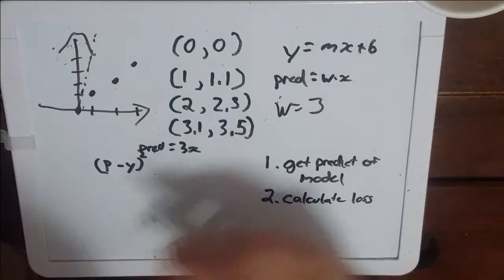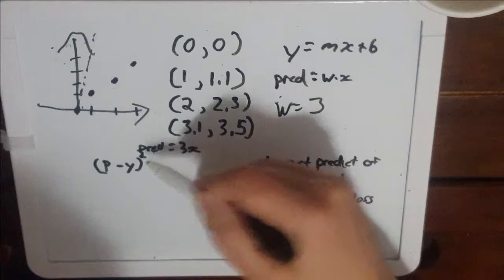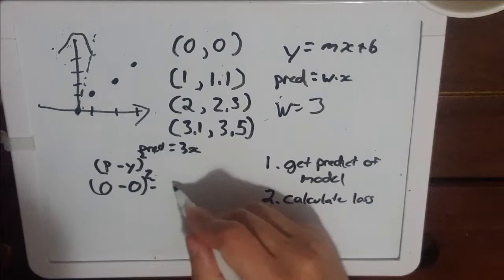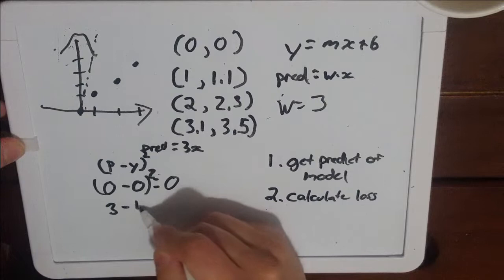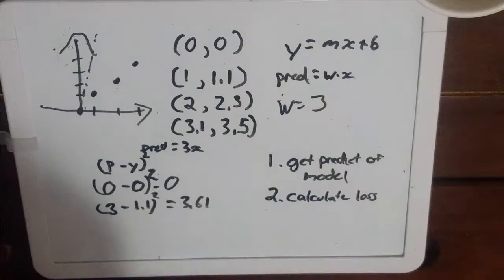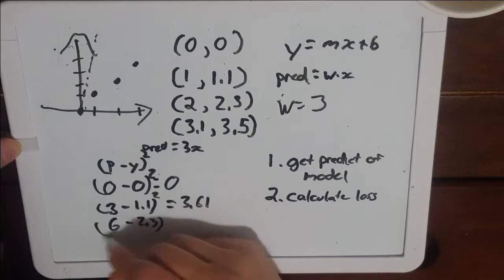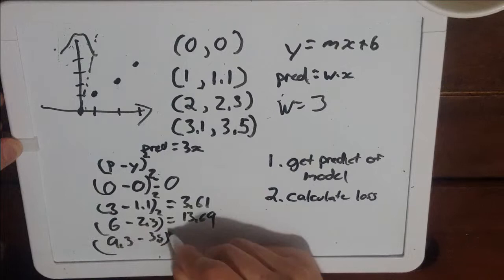Okay, so I'm going to calculate that. We get our prediction when we send in input data into our function. Zero times three gives us zero, we subtract it by our label which is zero, then we square it and that equals zero. Next one: we take our one, put into our 3x we get three, we subtract 1.1 and then we square so we get 2.9 squared is 3.61. Two times three is six minus 2.3 squared we get 13.69. And 3.1 times 3 is 9.3, we subtract 3.5, we square it and we get 33.64.